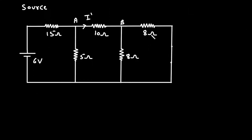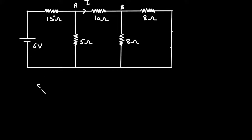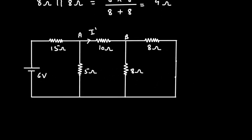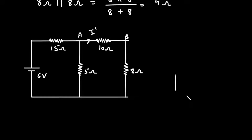Here we can see the 8Ω and 8Ω resistors are connected in parallel. Their equivalent resistance will be 8 parallel with 8, which equals 8 × 8 divided by 8 + 8, equal to 4Ω. We can now replace these two resistances by a single resistance of 4Ω.